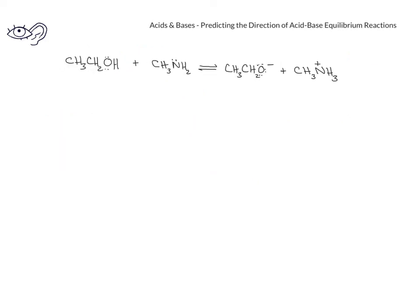When we have acid-base reactions involving organic reactants and products, it will often be the case that the forward and reverse reactions exist in equilibrium. Because of this, we'll want to predict the direction of the acid-base equilibrium reaction position. The rule of thumb we'll use is that the equilibrium favors the formation of the weaker acid.